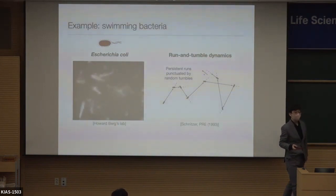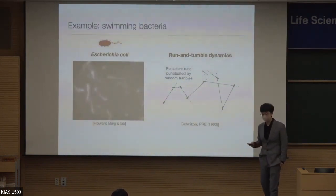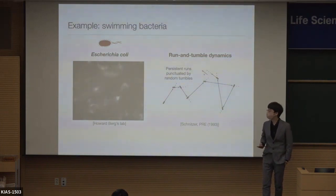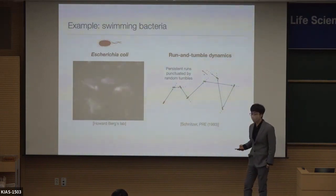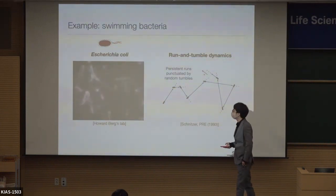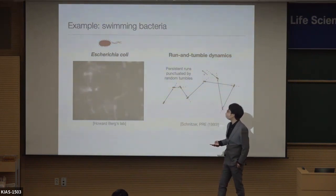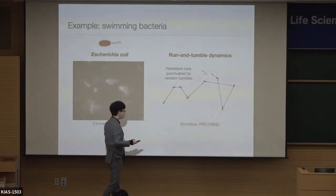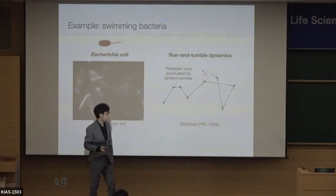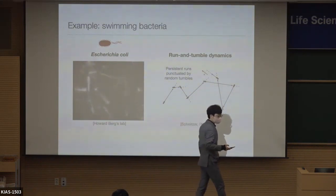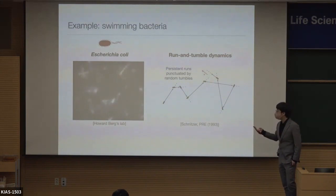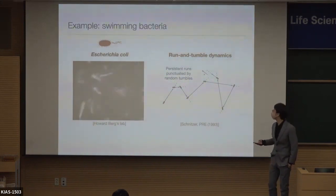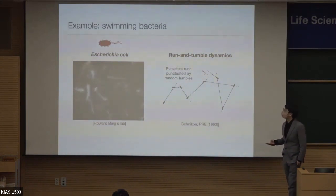I think I'm the first speaker really talking about active matter, so let me first introduce the concepts. A very representative example is E. coli. It swims by moving its flagella; it's shaped like an oblong ellipsoid. It keeps moving in a straight line for some time, and then at some given rate it starts tumbling in the same position, then runs again. The motion can be simplified as a series of straight runs punctuated by random tumbles at a given rate to a random direction. This is called run-and-tumble dynamics.